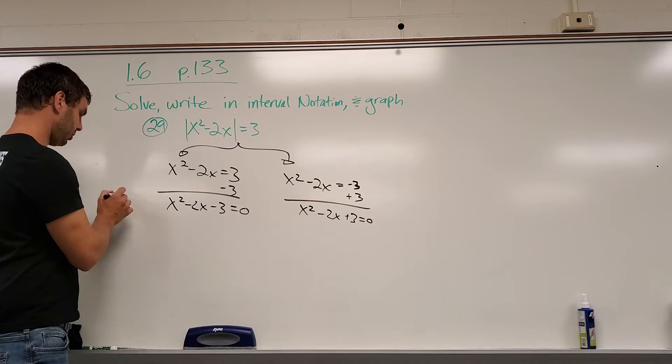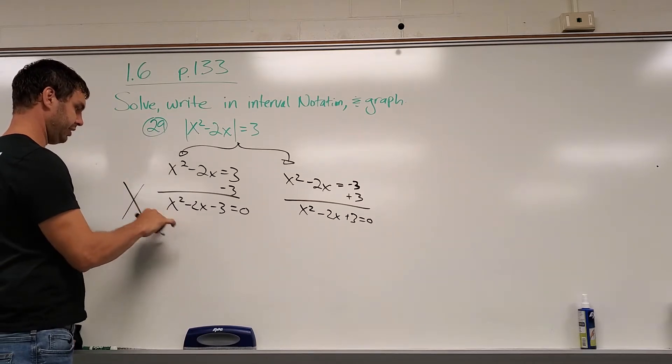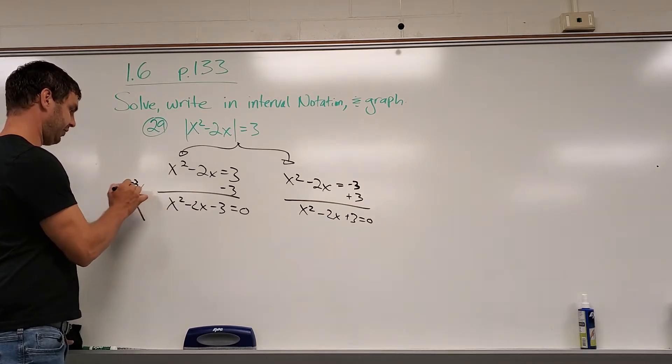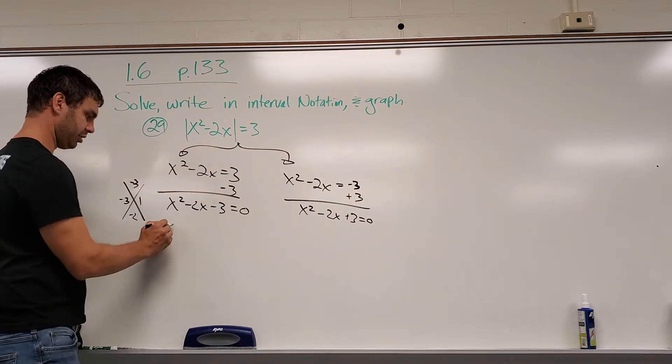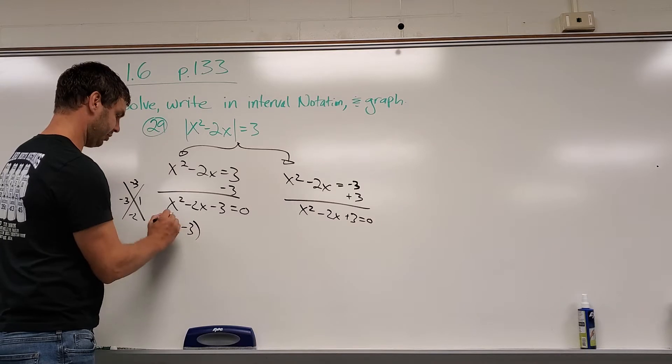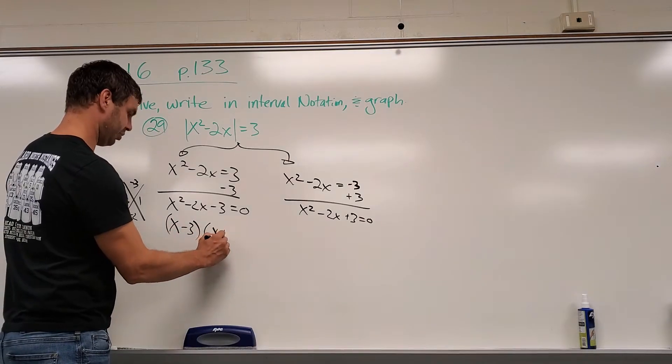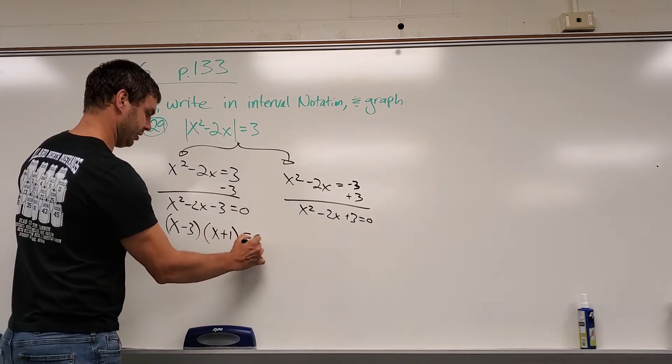All right, now on this one, let's see, we have, I think we can factor it. Let's say if I do negative 3, 1, that would work. So, x minus 3 times x plus 1 equals 0.